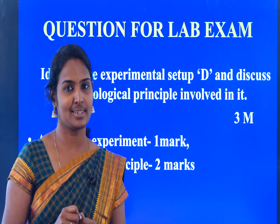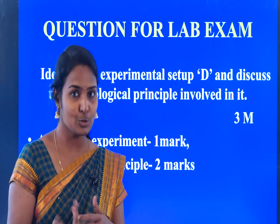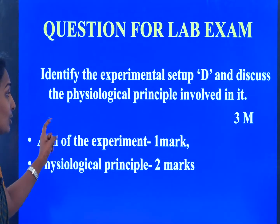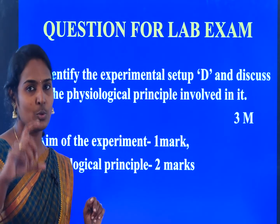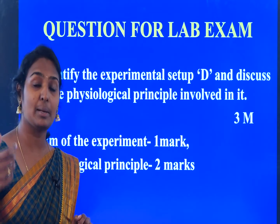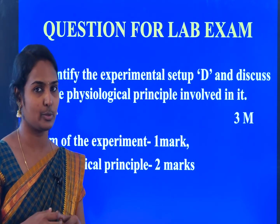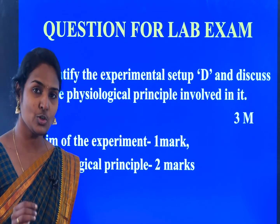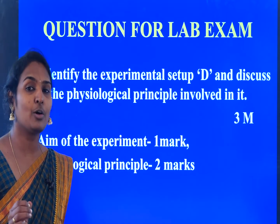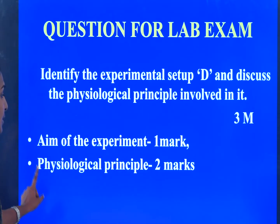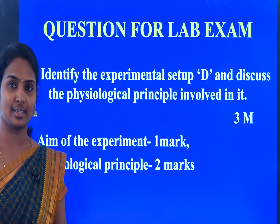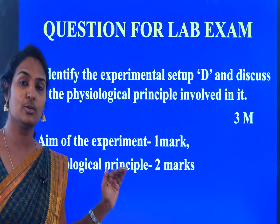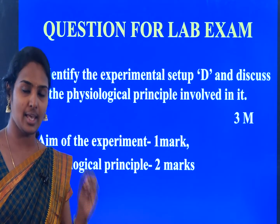My dear students, for exam questions on paper chromatography, you may be asked to identify the experimental setup and discuss the physiological principle involved. First write the aim — separation of pigments using paper chromatography — and then explain the physiological principle of how the technique works. You will be awarded 2 marks for the principle and 3 marks total for the correct aim and principle.